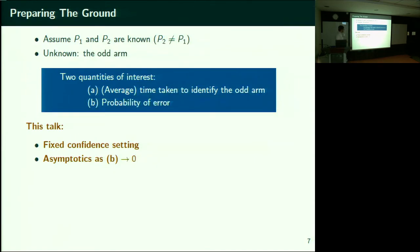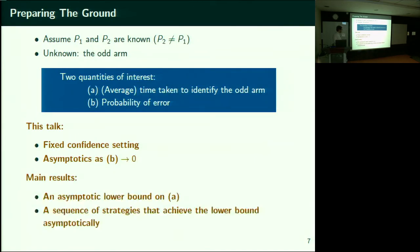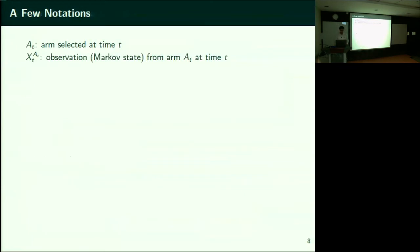Our results are going to be an asymptotic lower bound on the expected time as a function of the probability of error, in the asymptotics as probability of error goes to zero. I'm also going to give you a sequence of strategies that match this asymptotic lower bound.